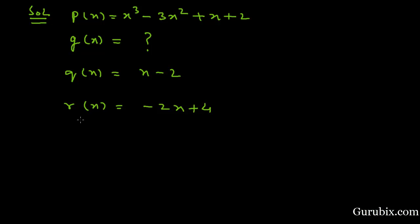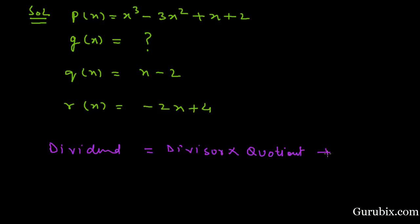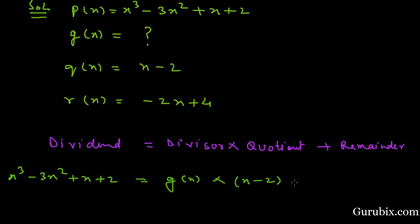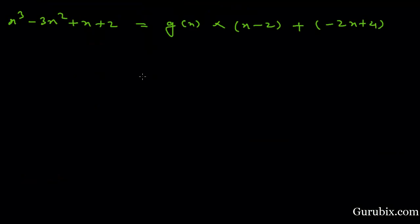Now we shall apply the division algorithm: dividend equals divisor into quotient plus remainder. Here, the dividend is x cubed minus 3x squared plus x plus 2, the divisor is g(x) which we have to find, the quotient is x minus 2, and the remainder is minus 2x plus 4. Now we shall find the value of g(x).